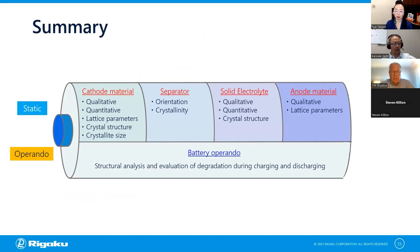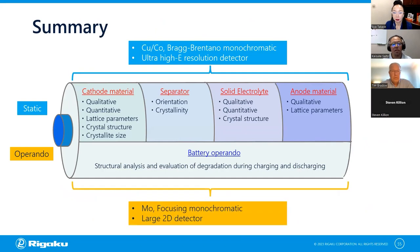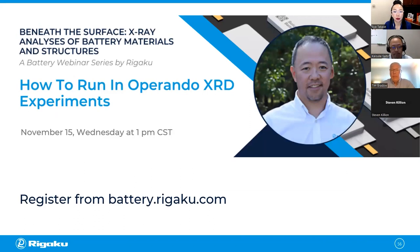Let me conclude. For static measurement, the best configuration is copper or cobalt X-ray source combined with Bragg-Brentano monochromatic beam and ultra-high energy resolution detector. For operando measurement, molybdenum is the best choice combined with focusing monochromatic beam for better transmittance, combined with as large a 2D detector as possible. Thank you very much for your attention. We have time for one or two questions.